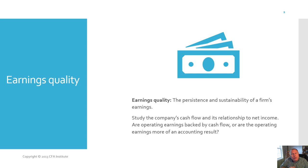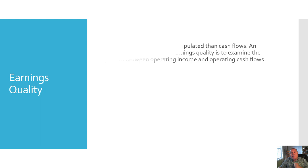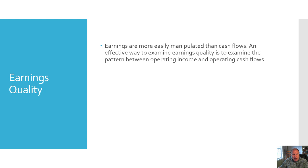The first step is really taking a look at earnings quality. Generally, the purpose of the firm, as you recall, is long-term sustainability. And to do that, there has to be a relationship between net income and cash flow. So the question becomes: are the operating earnings backed by cash flow, or are the accounting earnings more of an accounting result — the way something is handled? Earnings can be more easily manipulated than cash flow, so an effective way to examine earning quality is to look at the pattern between operating income and operating cash flows.